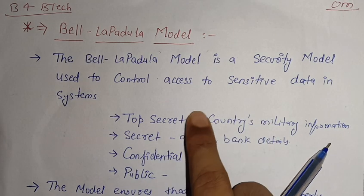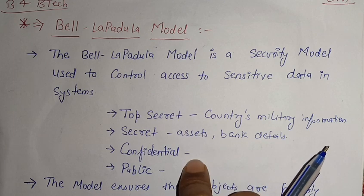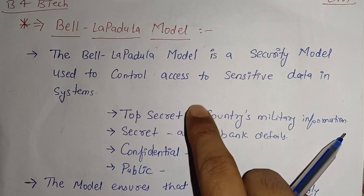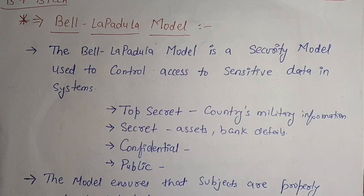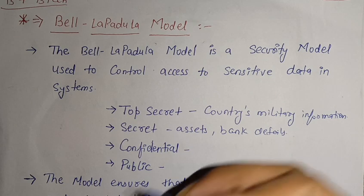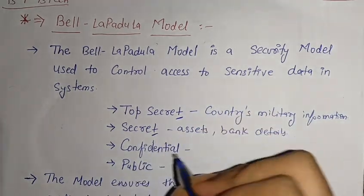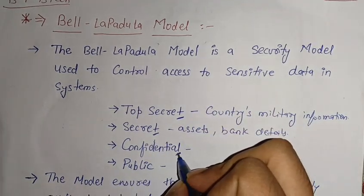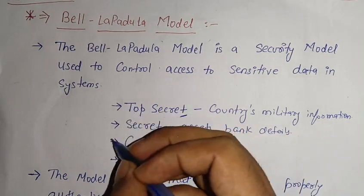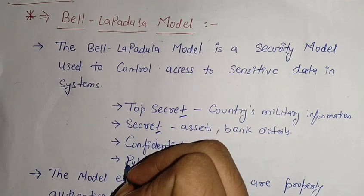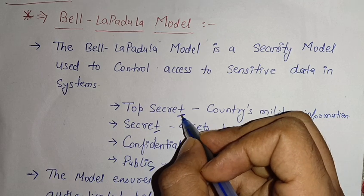Any organization will have four types of information or data. We will talk about these four types: top secret, secret, confidential, and public data. These are the four types of data any organization holds.